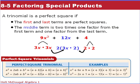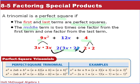A trinomial is a perfect square if the first and last terms are both perfect squares — so A and C must be perfect squares — and the middle term is twice the product of the square root of A times C.